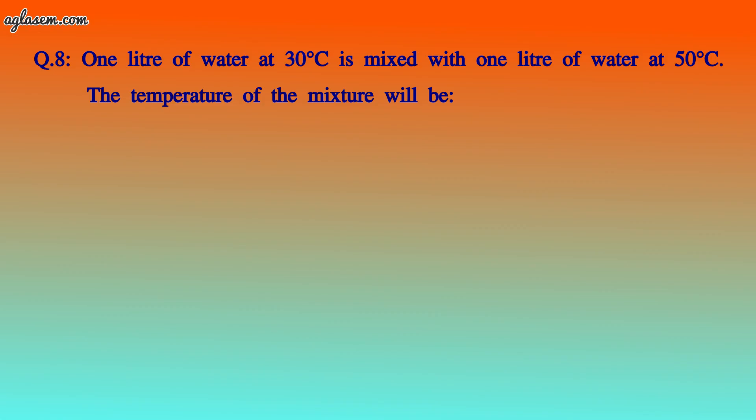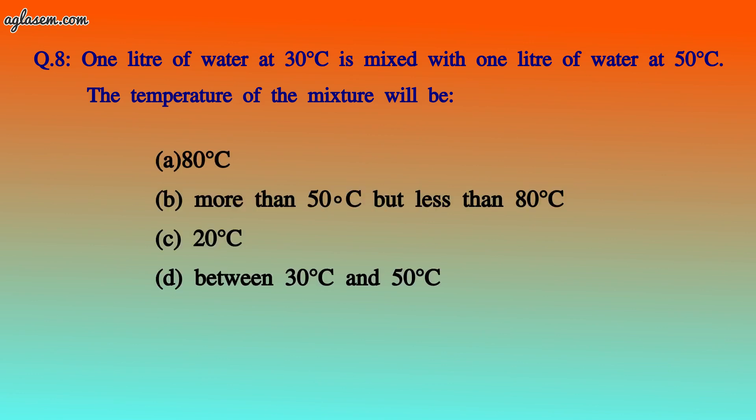Question number 8: 1 liter of water at 30°C is mixed with 1 liter of water at 50°C. What will be the temperature of the mixture? Options: 80°C, more than 50°C but less than 80°C, 20°C, or between 30°C and 50°C. The answer is: the temperature of the mixture will be between 30°C and 50°C.